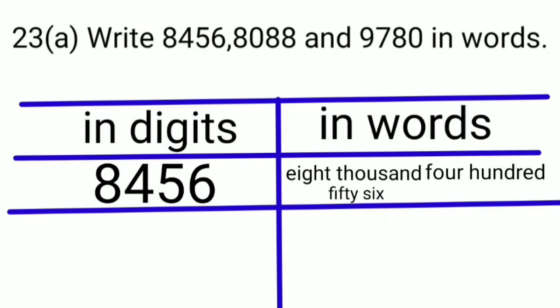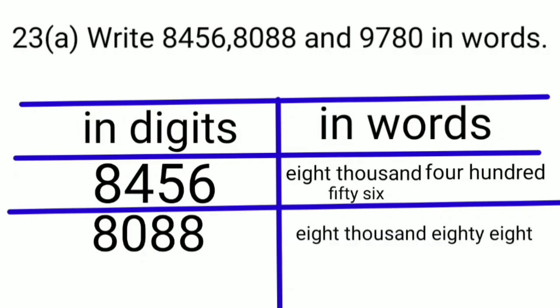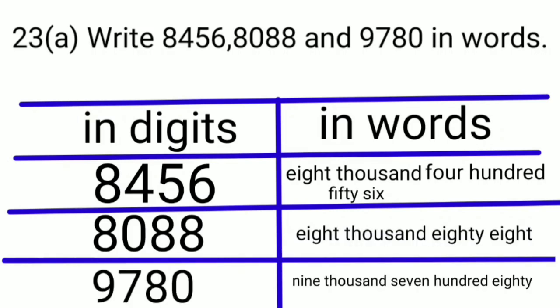In the same way, we can write the other two numbers in words also. The second number is 8,088 and the third number is 9,780.